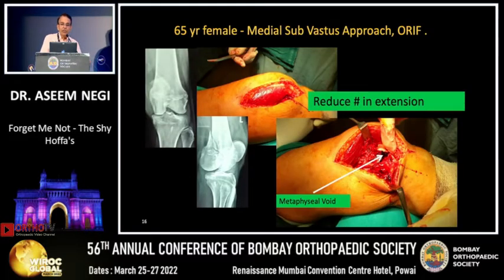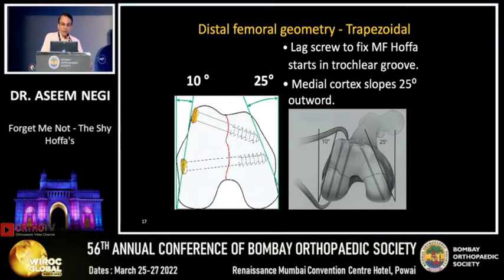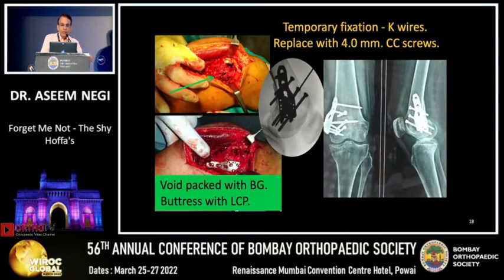This 65-year-old female was treated by the medial sub-vastus approach. When fixing a Hoffa element on the medial femoral condyle, the lag screw has to start in the trochlear groove because the medial cortex of the femur slopes 25 degrees outward. Temporary K-wires were later replaced with lag screws, white pegs with bone grafts, buttressed with LCP.